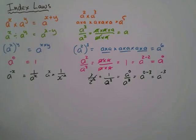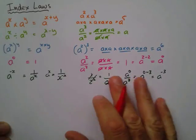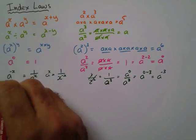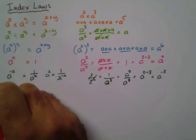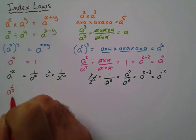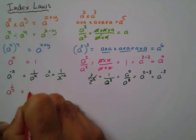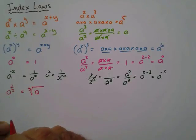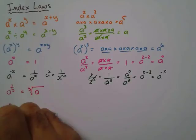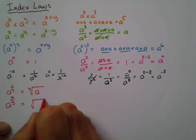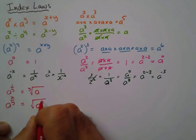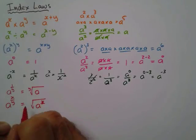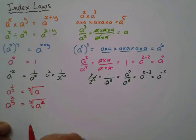The last rule, property, it's not that easy to show with an example, just something you have to remember, is if I have a to the power 1 over y, that is the same as the yth root of a. In other words, another way of doing it is a to the power x over y equals the yth root of a to the power x.